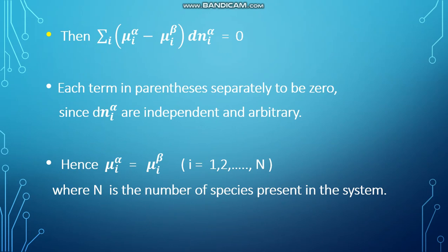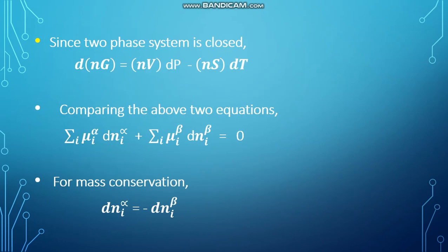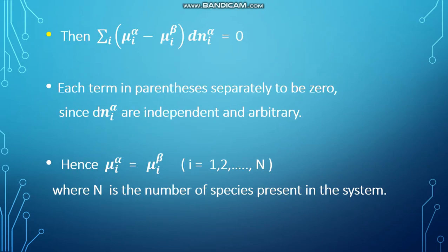Then the equation becomes Σᵢ (μᵢ^α - μᵢ^β) dnᵢ^α = 0. That means by substitution of dnᵢ^α = -dnᵢ^β in the above equation, we get this equation.